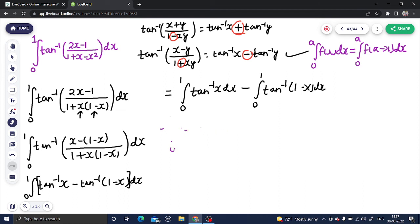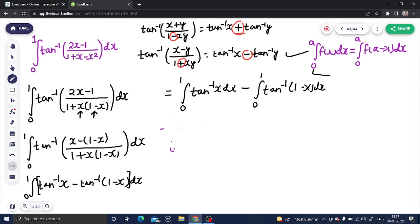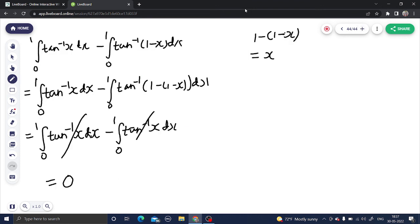No problem whatsoever in this particular question because in the end everything reduced to just a 0. We just used one property of definite integration, 0 to a f x dx is equal to 0 to a f of a minus x dx, and just the observation that we can convert this one integral into 2. Because there was a minus sign in the middle, same quantity when subtracted gives you 0. So 0 is your final answer.